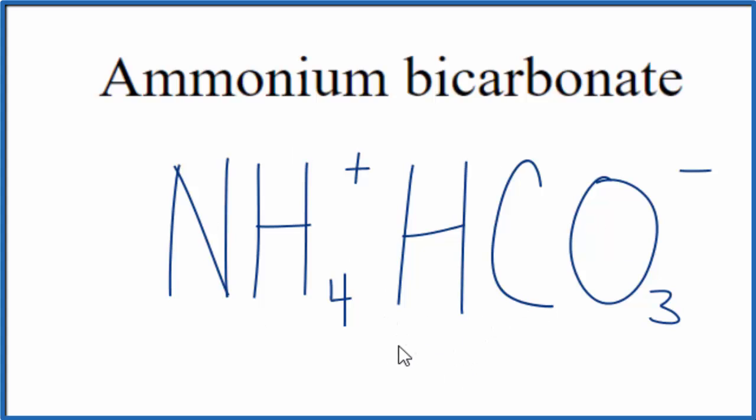So 1 plus and 1 minus adds up to zero. This is the formula for ammonium bicarbonate, also called ammonium hydrogen carbonate. Let's clean it up a bit. That's it, the formula for ammonium bicarbonate. This is Dr. B and thanks for watching.